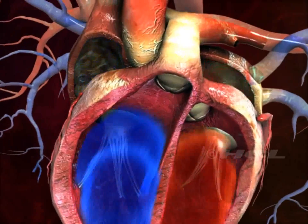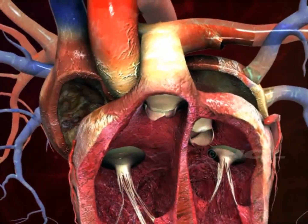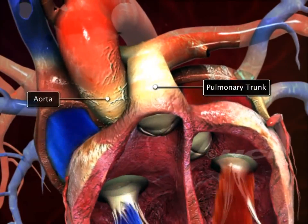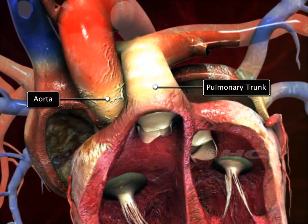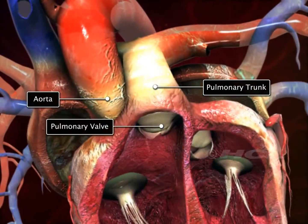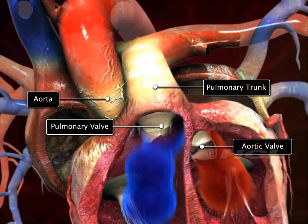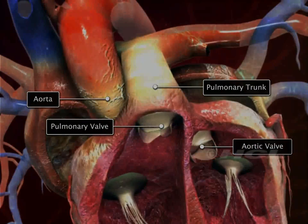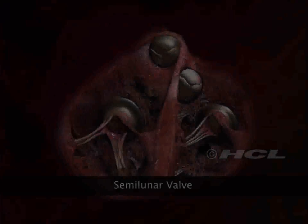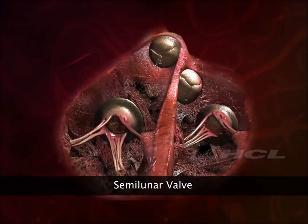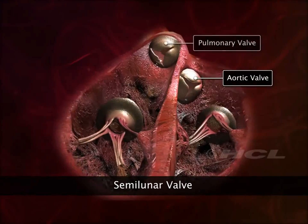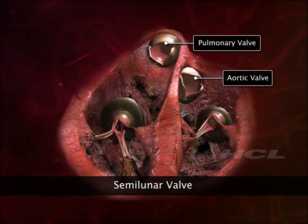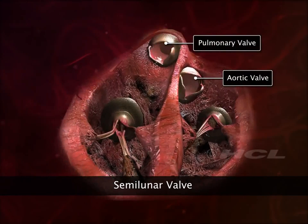There are also valves at the opening of the pulmonary trunk and the aorta. These are called the pulmonary valve and the aortic valve respectively. Because of their crescent moon shape, these two valves are also called semilunar valves.